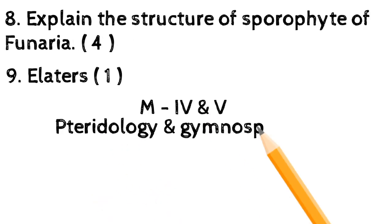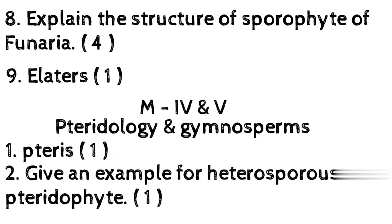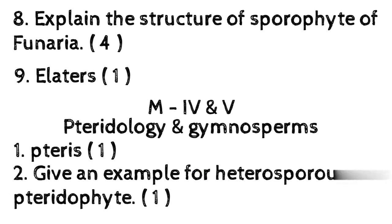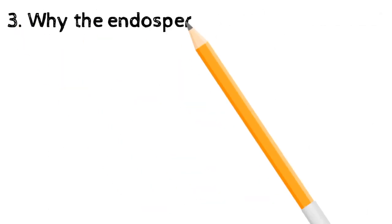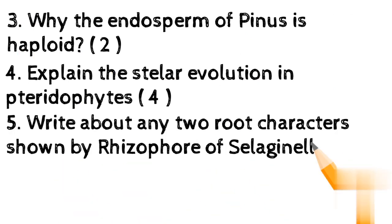MIV and V Pteridology and Gymnosperms: 1. Pteris (1 mark). 2. Give an example for heterosporous pteridophyte (1 mark). 3. Why the endosperm of Pinus is haploid? (2 marks). 4. Explain the stellar evolution in pteridophytes (4 marks).